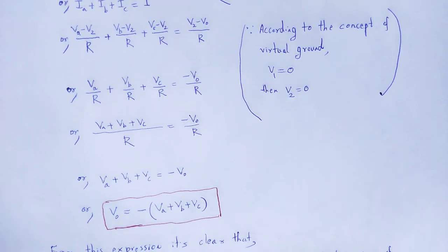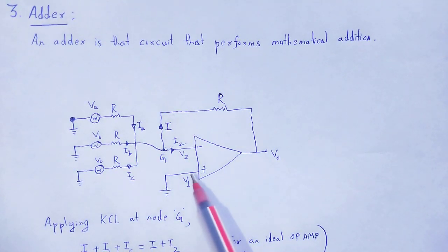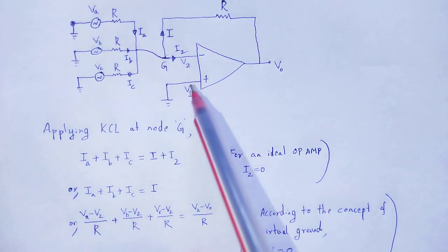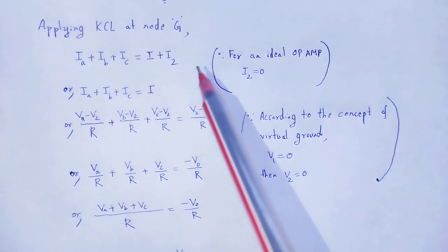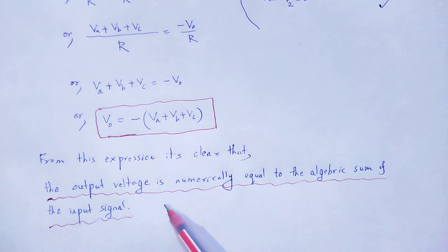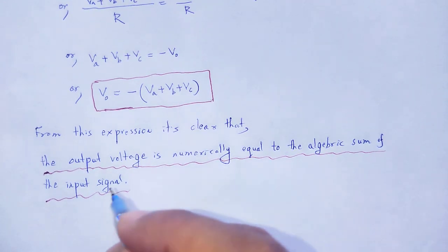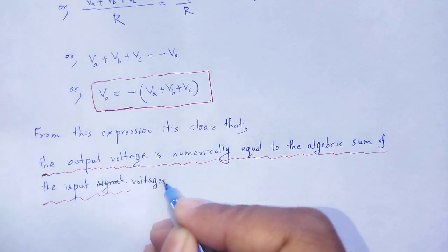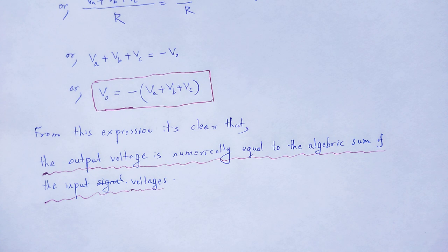With the help of this video lecture, we understand how we create an adder circuit by using an op-amp. We provide signals at the input and at the output we obtain the signal that is the algebraic sum of all input voltages. The output voltage is numerically equal to the algebraic sum of the input signals. By using an op-amp, we create an adder circuit. With this useful and informative note, let me wind up. Thank you.